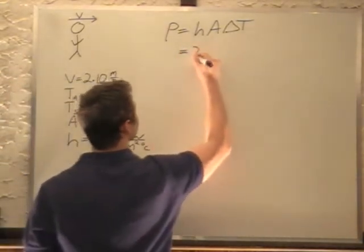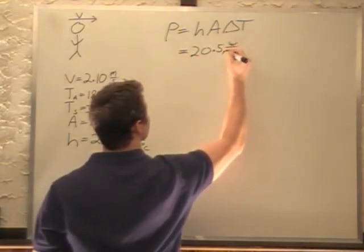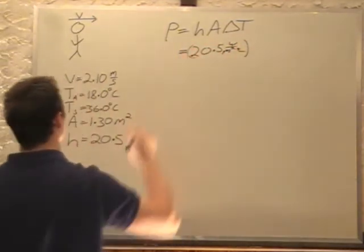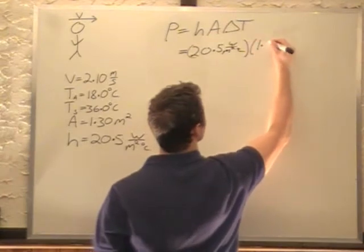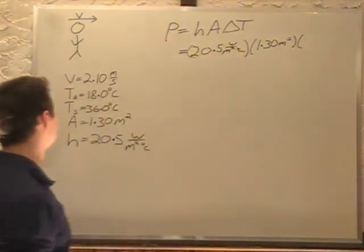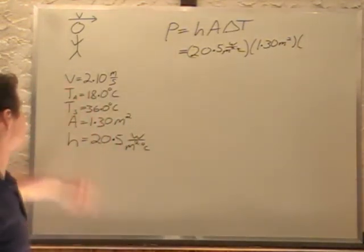H is given as 20.5 watts per meter squared degree Celsius. A is our area of 1.30 square meters. And our delta T is the difference in the two temperatures, which is 36 minus 18.